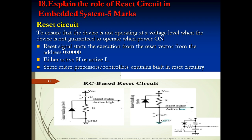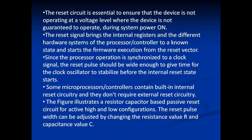The active-high reset pulse is connected to VCC; the active-low reset signal is connected to ground. A freewheeling diode is connected to avoid short circuits or excessive current flow into the capacitors and resistors. Most processor controllers contain built-in reset circuitry and don't require any external reset circuit. The RC-based passive reset circuits are available for both active-high and active-low configurations. The reset pulse width can be adjusted by changing the resistance R and capacitance C values.